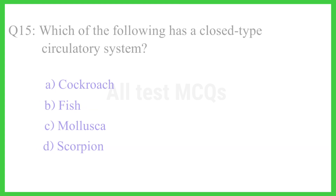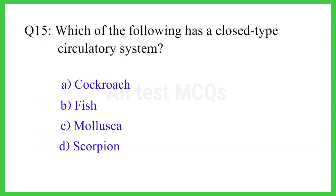Q15. Which of the following has a closed type circulatory system? The right answer is option B. Fish.